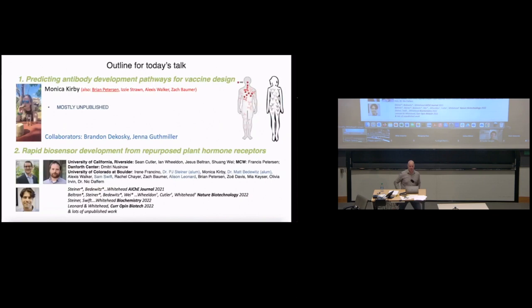For today's talk, I'm going to tell you vignettes on two of the three active research programs in my lab. The first is predicting antibody development pathways. This is by Monica Kirby, shown here in Cuba smoking a cigar. This is mostly unpublished, but we should have a publication on archive in the next month or so. Collaborators include Bernie Dukowski, who I was told was here last month giving a seminar, as well as Jenna Guthmiller at CU Anschutz.